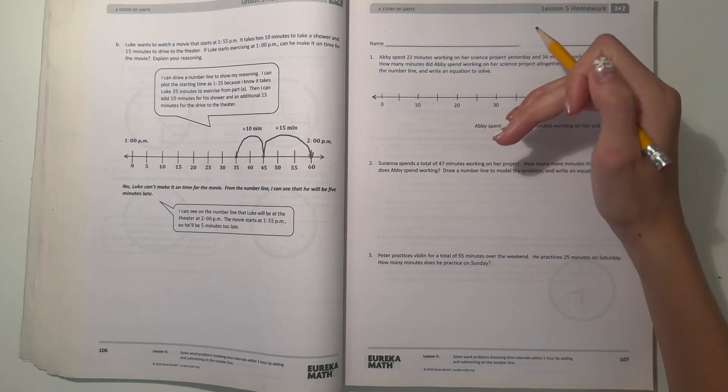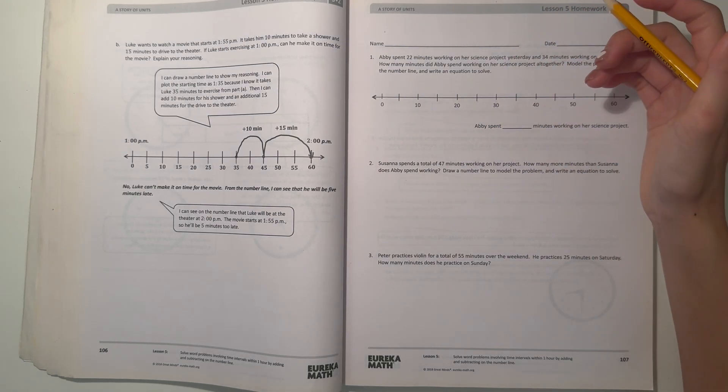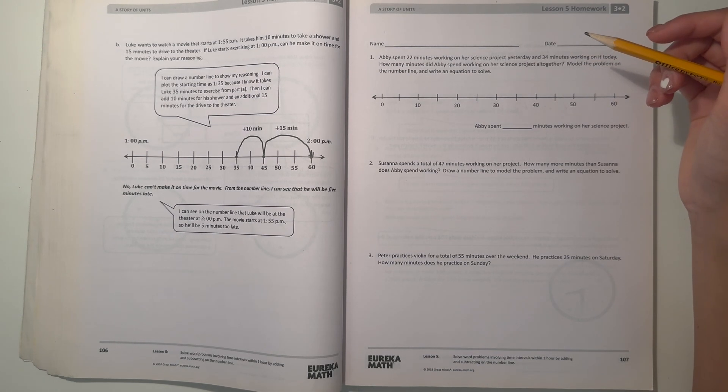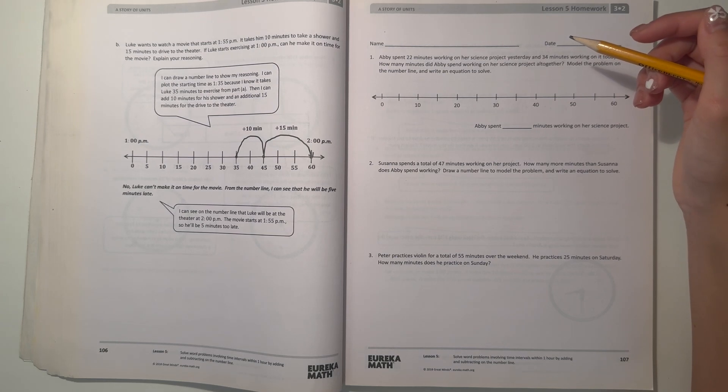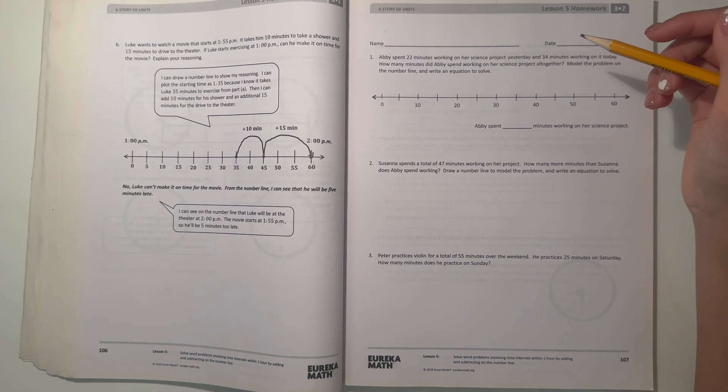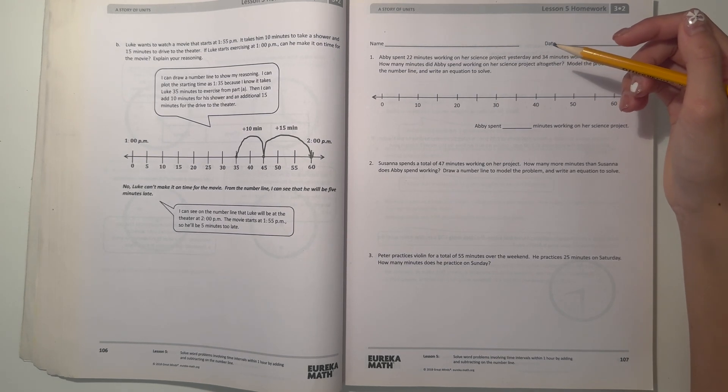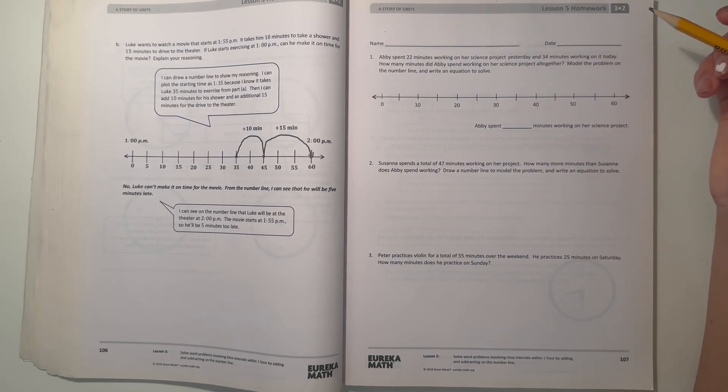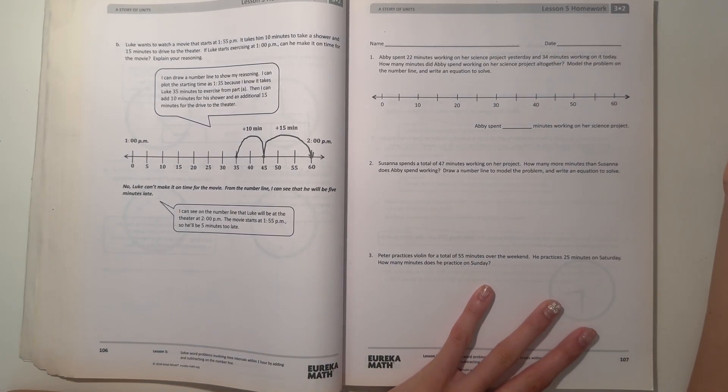Number one, Abby spent 22 minutes working on her science project yesterday and 34 minutes working on it today. How many minutes did Abby spend working on her science project altogether? Model the problem on the number line and write an equation to solve. So let's start with what we know. She spent 22 minutes yesterday, now 34 minutes today. So our job is to find the total amount of minutes.